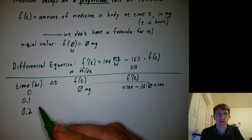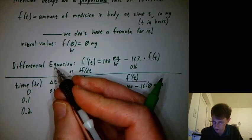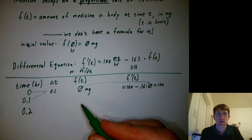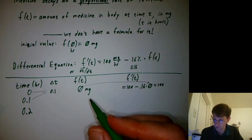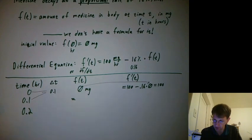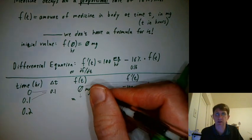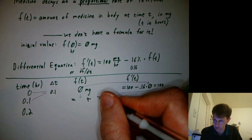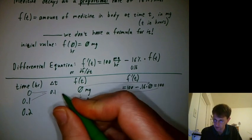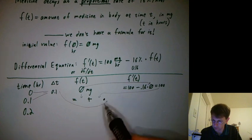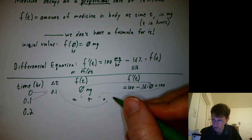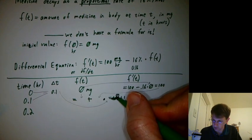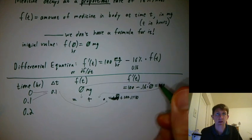So then one tenth of an hour later, delta t here is 0.1. How much medicine is in the body? We'll use our calculus prediction equation and say the current value uses the previous value plus the rate of change, which is 100 right now, times delta t. So those will all be cell references. And what we'll get is 0 plus 100 times 0.1, which is 10. So I'll have a 10 in this cell.